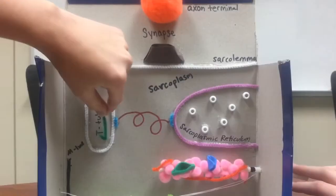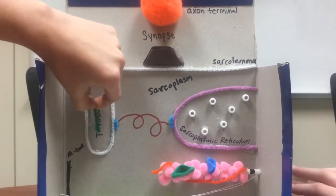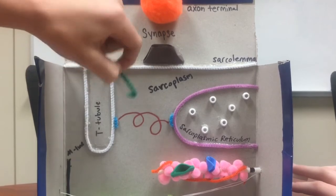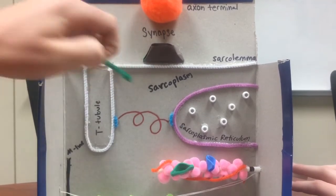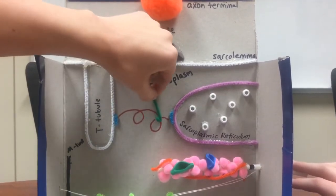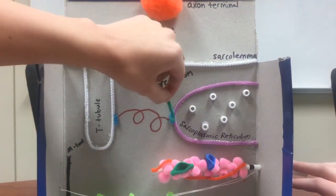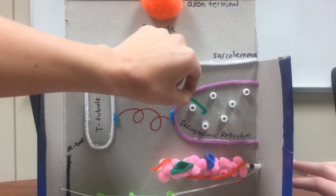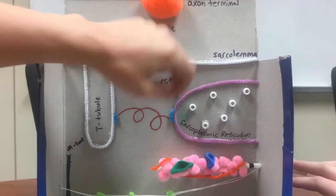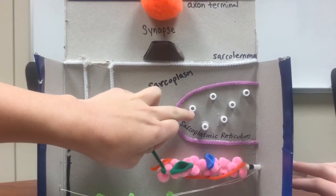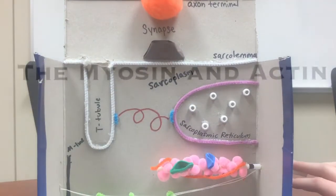When the action potential reaches the receptor, indicated by the blue pipe cleaner, the signal is carried into the sarcoplasmic reticulum. This signal causes the release of calcium, which is indicated by the white bead.